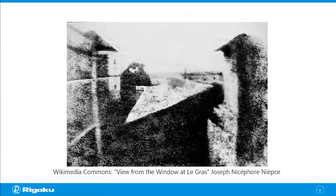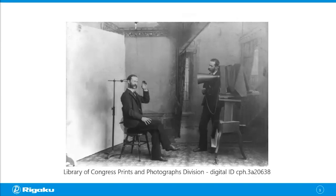You might notice that the buildings were illuminated from both sides. This is because it took eight hours to record this image, and the sun was moving during that eight-hour exposure. If it takes eight hours, you really can't use this technique to take pictures of people. So we needed to wait until the 1830s to 1840s, when Niépce's associate Louis Daguerre went on to develop a new method and shortened the process down to minutes.